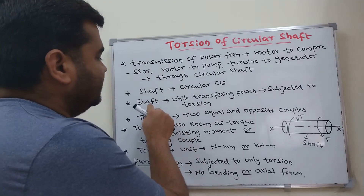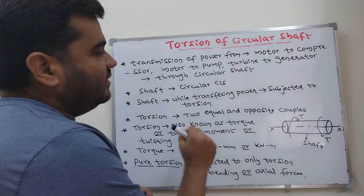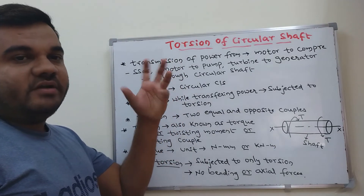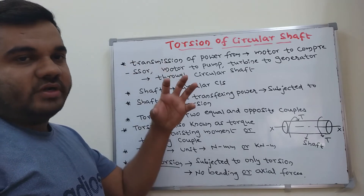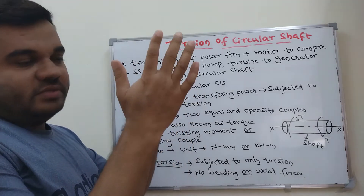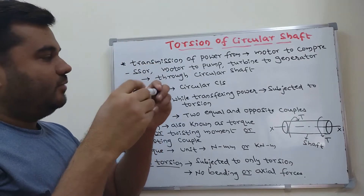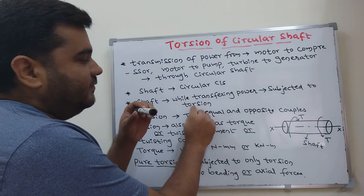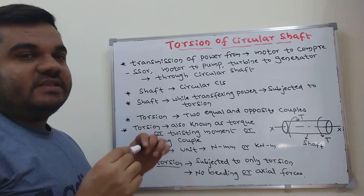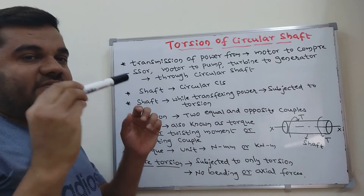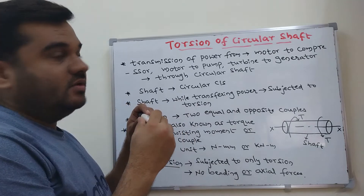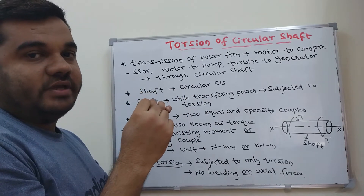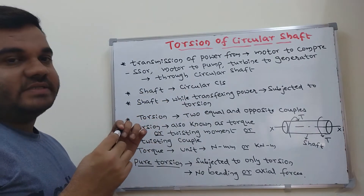The third point: the shaft, while transferring power, is subjected to torsion. The input component — the motor — has rotational mechanical power. When transferring this power to the compressor, the shaft is subjected to certain types of forces. That force is known as torsion. That's why we are discussing the circular shaft under torsion.